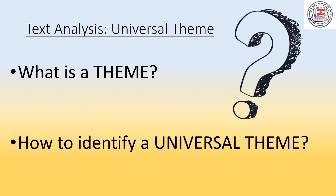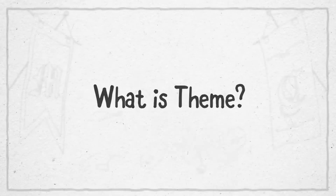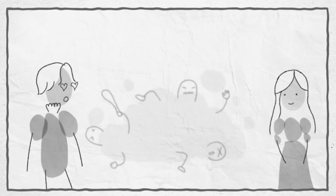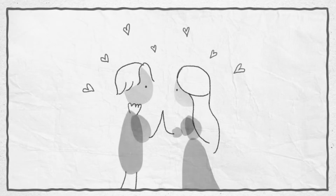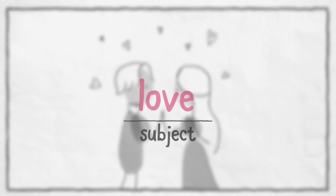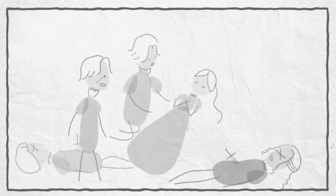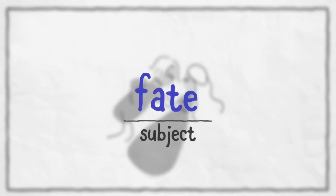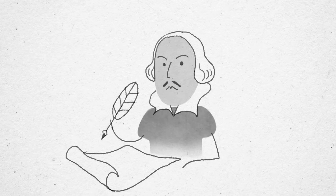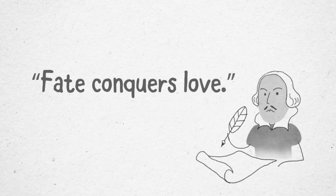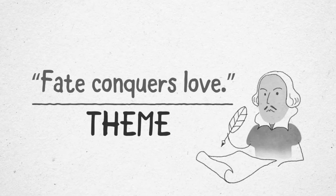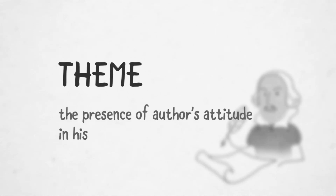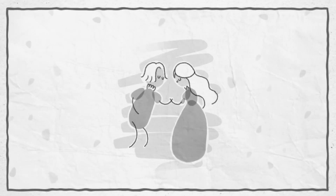What is a theme? How do you identify a universal theme? You could say it is their fate. Fate is another subject of the story. But what is Shakespeare saying about love and fate? Fate conquers love. This is a theme of the story. Theme is what the author is saying about his or her subject. However, a story can have more than just one theme. What could be another theme of Romeo and Juliet?